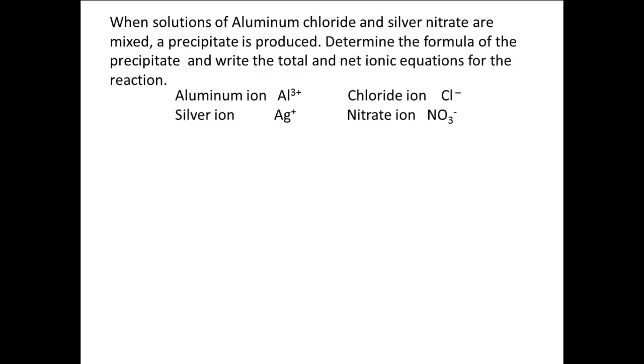One way to proceed from here is to write and balance the double replacement reaction. We have done this, and it is not hard to do. Start with the reactants. The formula of the aluminum chloride is AlCl3, and the formula of the silver nitrate is AgNO3. And both substances are in solution. Notice that it says this in the problem.